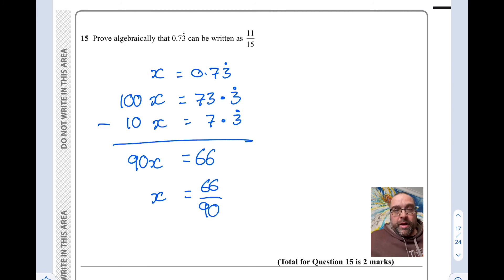Now if we look back at the question, we were trying to show that it can be written as 11 over 15. So all we need to do now is divide top and bottom by 6, which will give us the 11 15ths that we were looking for.